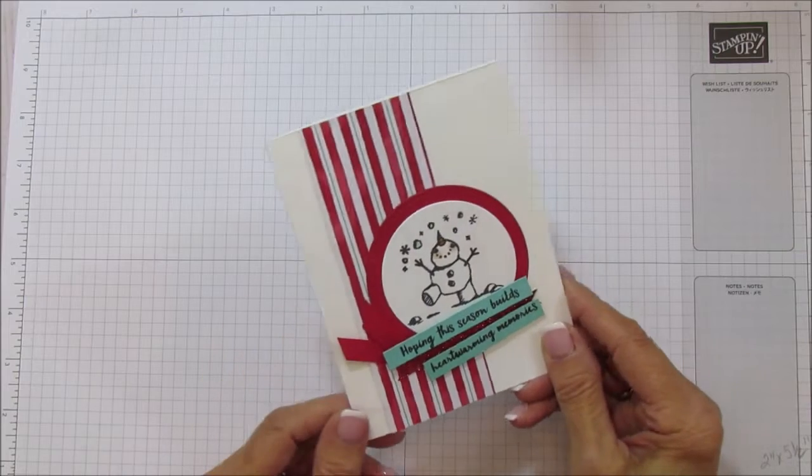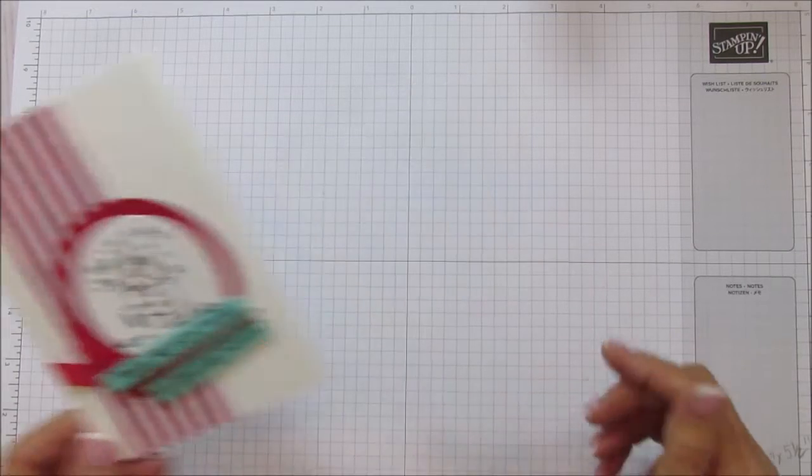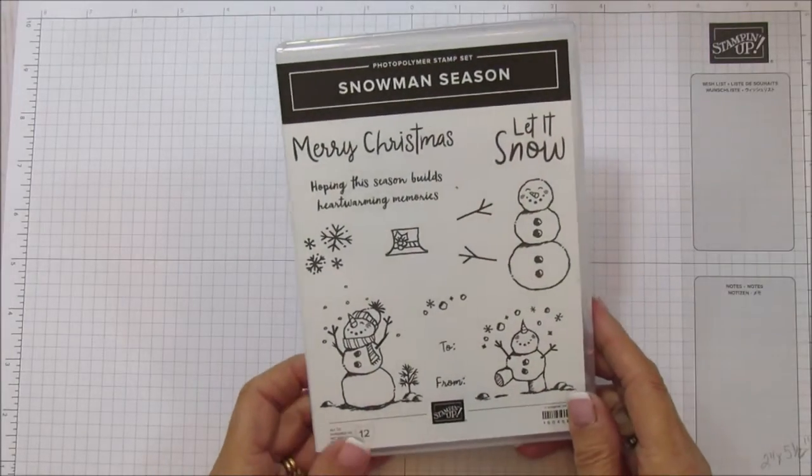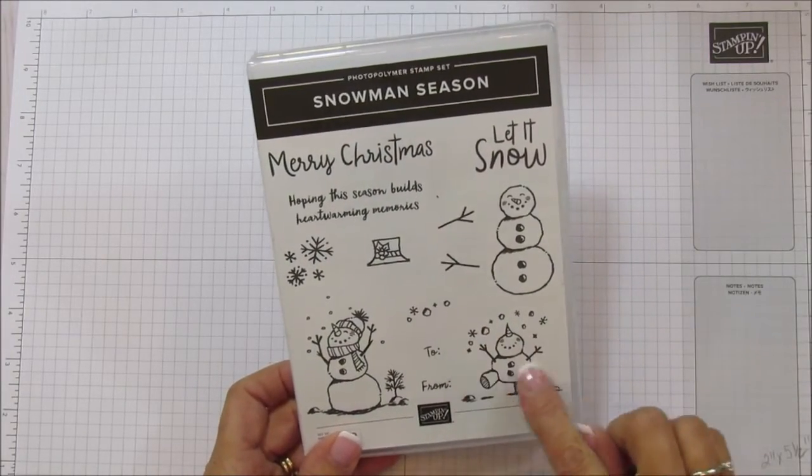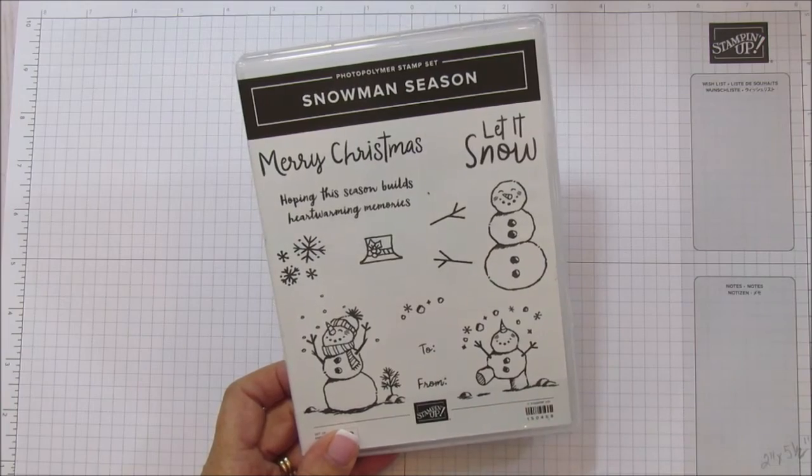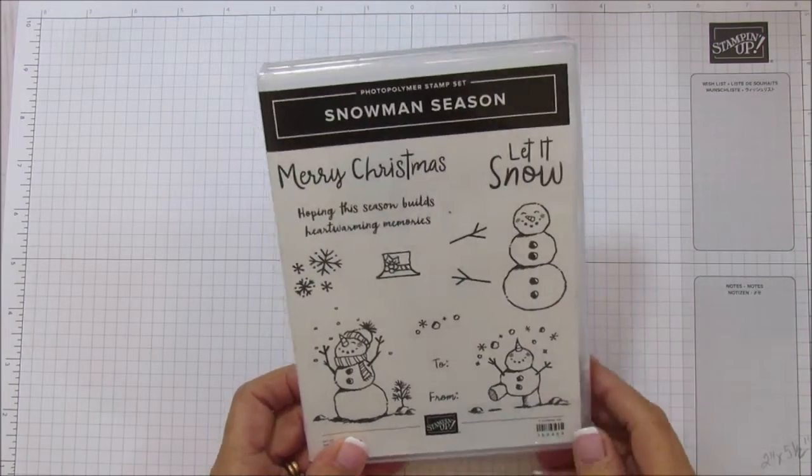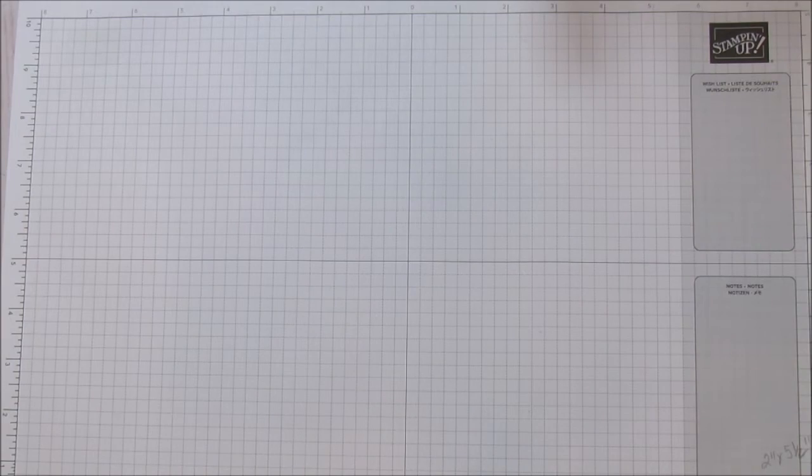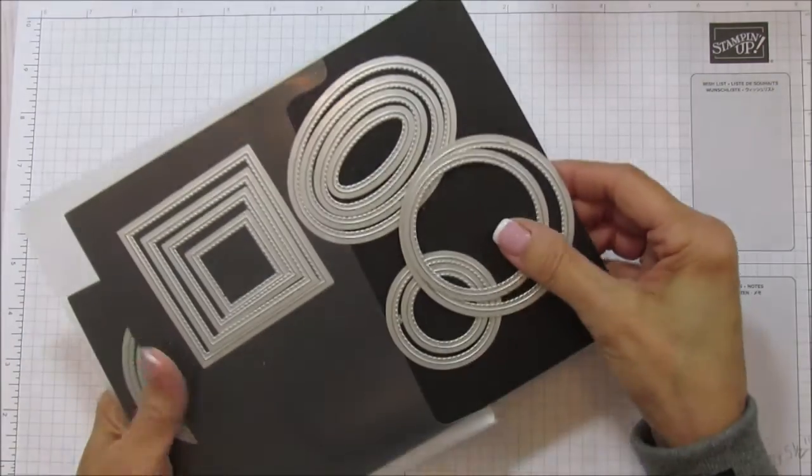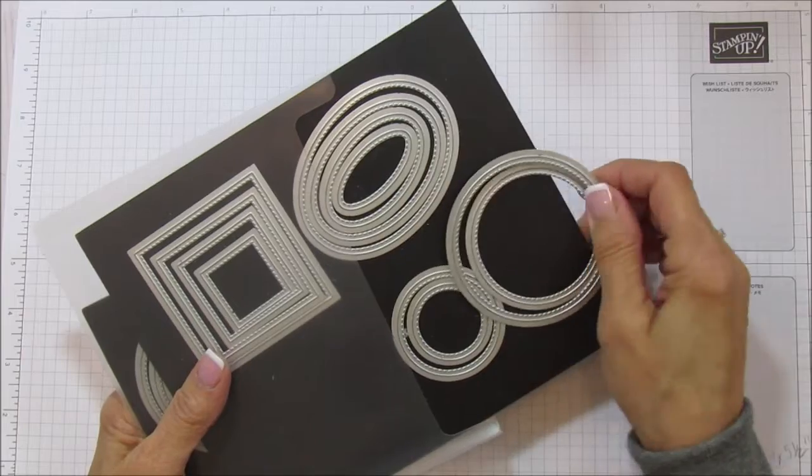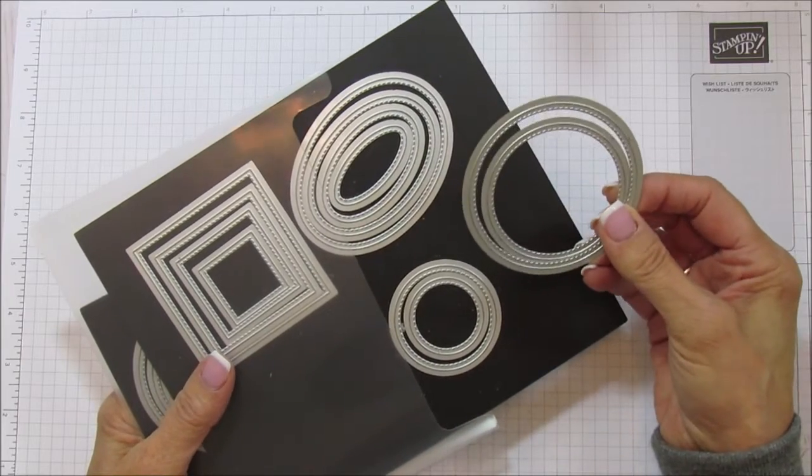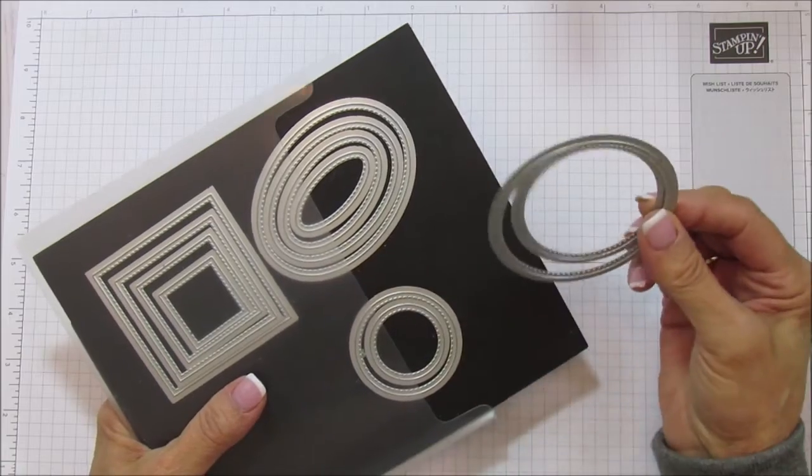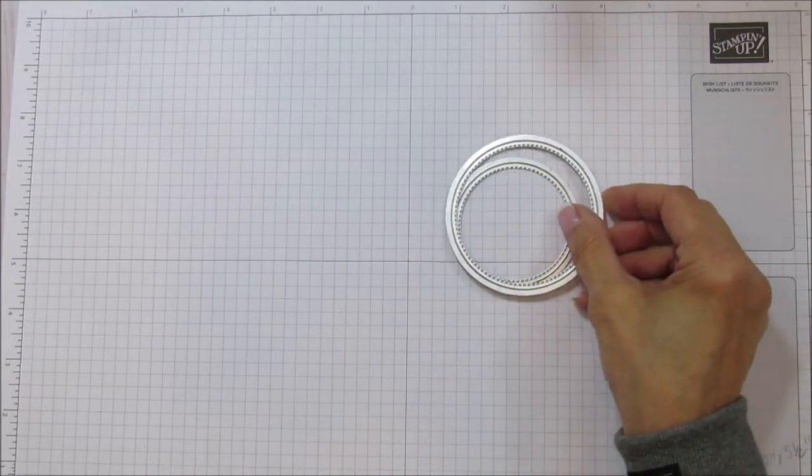But this one is the one I'm sharing today. So you are going to need the snowman season stamp set. This time I'm using this one here and he's so cute. I love the ones with the snow, it's just so cute. And then we're going to use our stitched circles here. These are the stitched shapes, but I am using the large and the second largest circle.